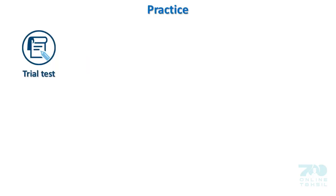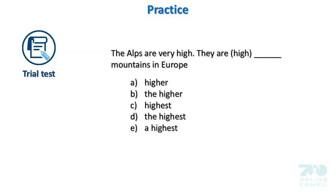Now let's have some trial test. You have to choose the right answer. The Alps are very high. They are the high — mountains in Europe. A: higher, B: the higher, C: highest, D: the highest, E: a highest. The correct answer is D: the highest.